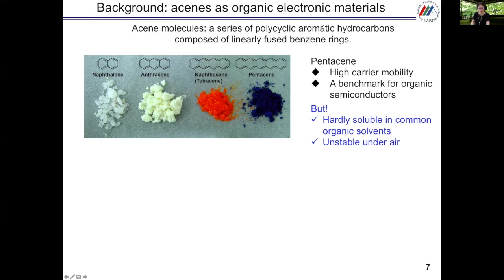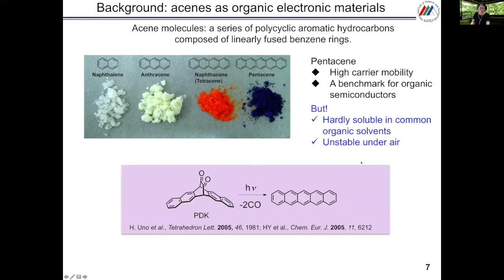Heptacene molecules are the series of polycyclic aromatic hydrocarbons composed of linearly fused benzene rings. Pentacene has a high carrier mobility and is a benchmark for organic semiconductors, but it is hardly soluble in common organic solvents and is unstable under air. In 2005, we reported the photoprecursor of pentacene, PDK. This can be converted to pentacene only by photoirradiation, and PDK is stable for heating.